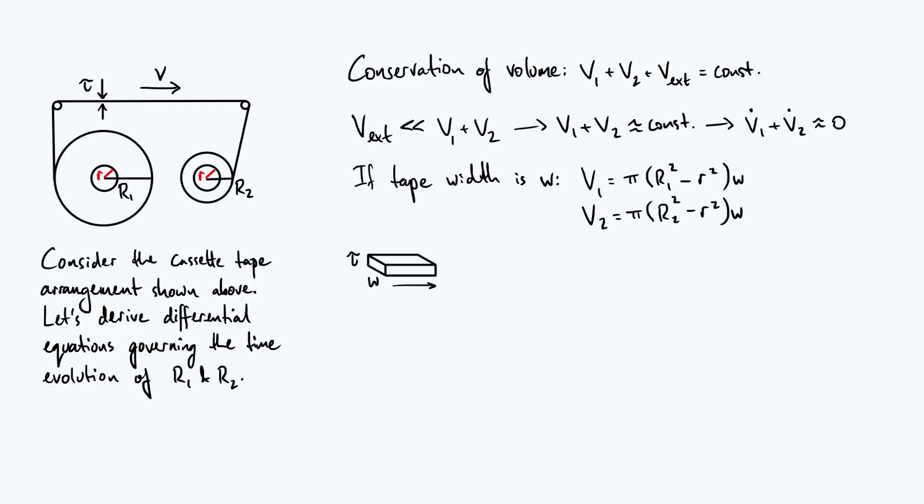So next, in order to understand a little bit more about the volume rate of change, I want to imagine zooming in to a small element of the tape, let's say at the top here. You're going to get a little cuboid shape that looks something like that. The height of that cuboid is the thickness of the tape, which is τ. The width is just w.